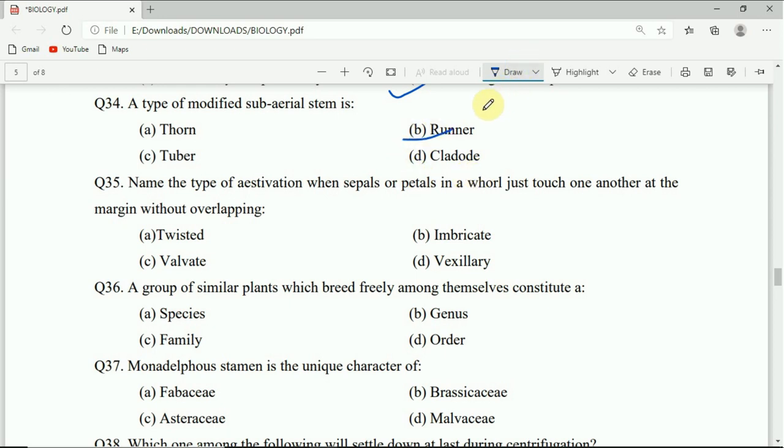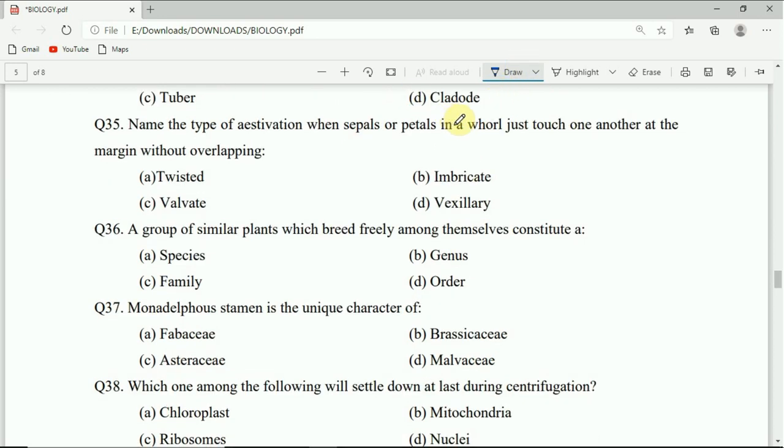Question 34: A type of modified sub-aerial stem is thorn, runner, tuber, or cladode. Correct answer is runner. Question number 35: Name the type of aestivation when sepals or petals in a whorl just touch one another at the margin without overlapping.